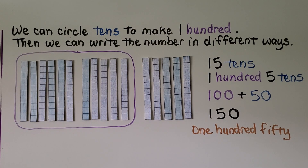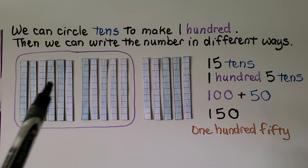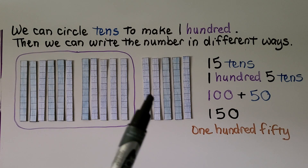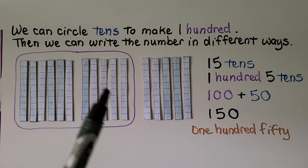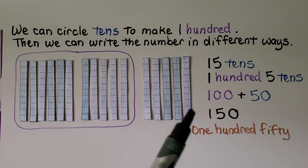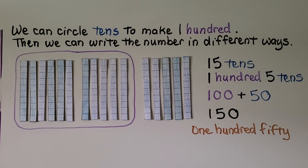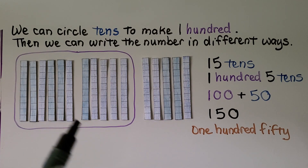We can circle tens to make 100. We have 10 tens — that's 100 — and five tens left over. We can write the number in different ways: we have 15 tens, we also have 100 and five tens, we have 100 plus 50, we have 150.